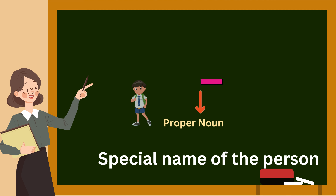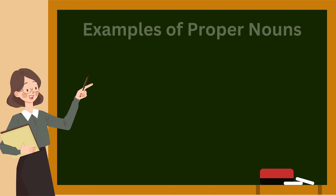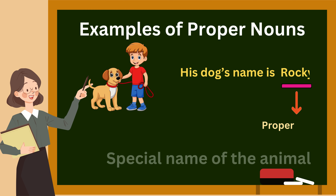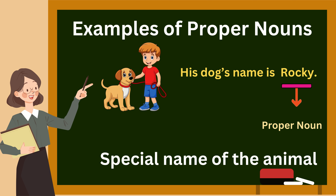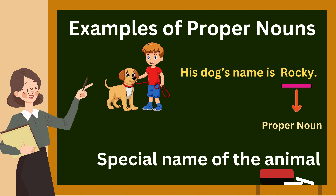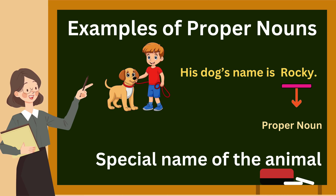'His dog's name is Rocky.' In this sentence, 'Rocky' is the proper noun. It is the special name of an animal.